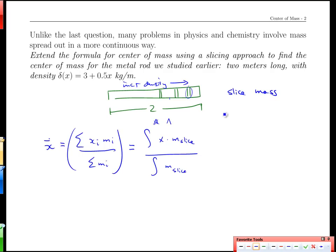The slice mass, which is in kilograms, is going to equal the density, which is kilograms per meter, times the width of the slice, width or length, which is in meters, so the units work out perfectly, and so our density was 3 plus 0.5 x. Our width of each slice is a very small interval, delta x, and then we can pop this into both of our integral points here and here.